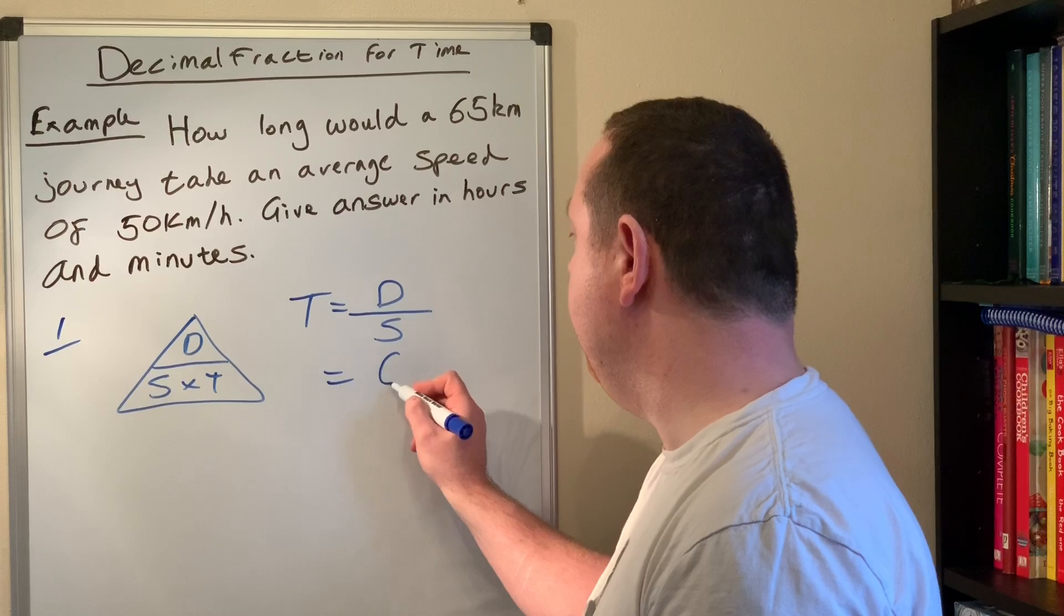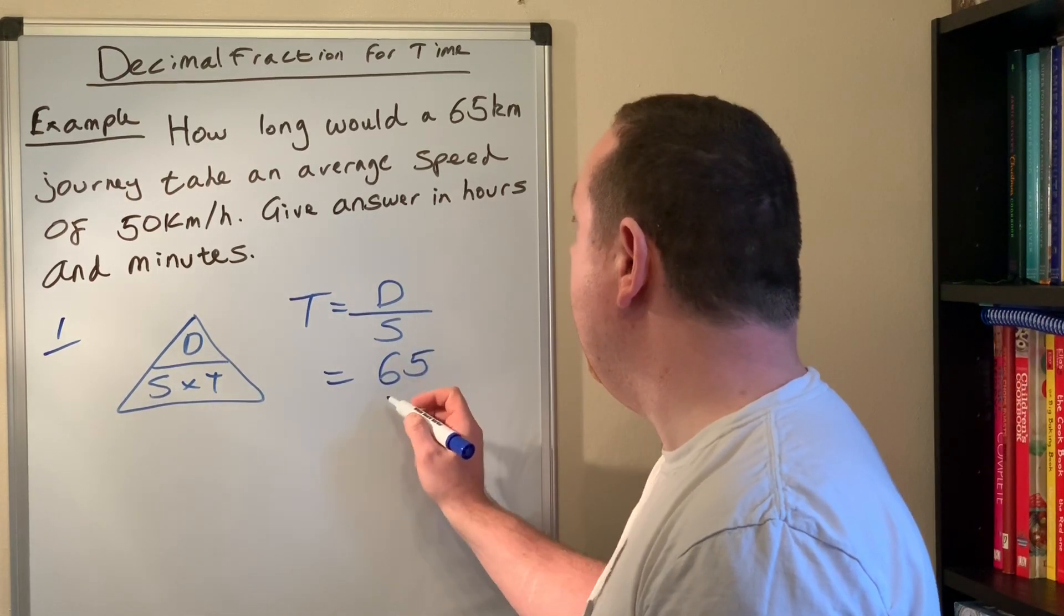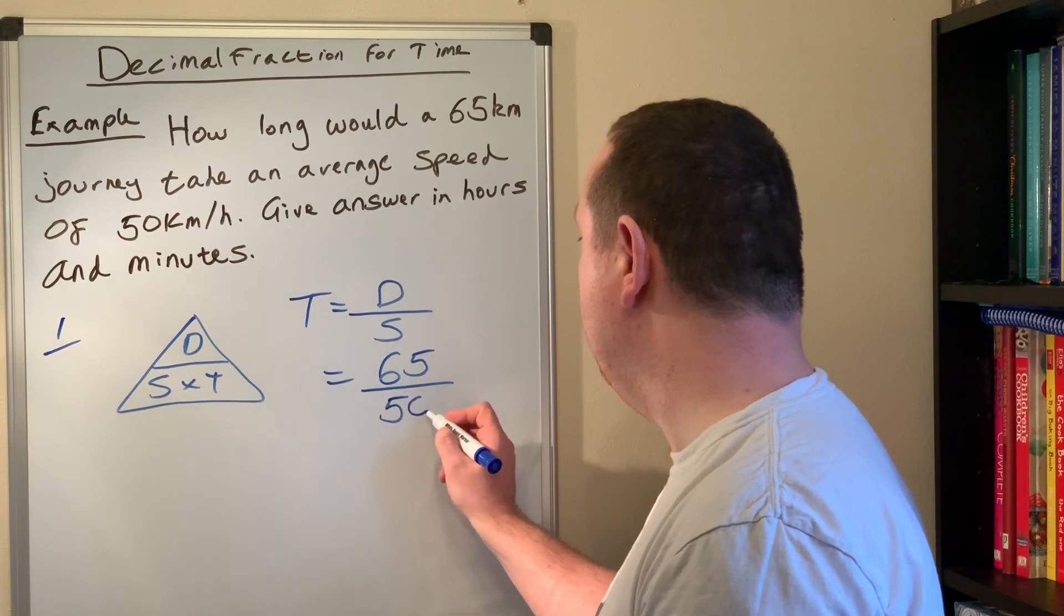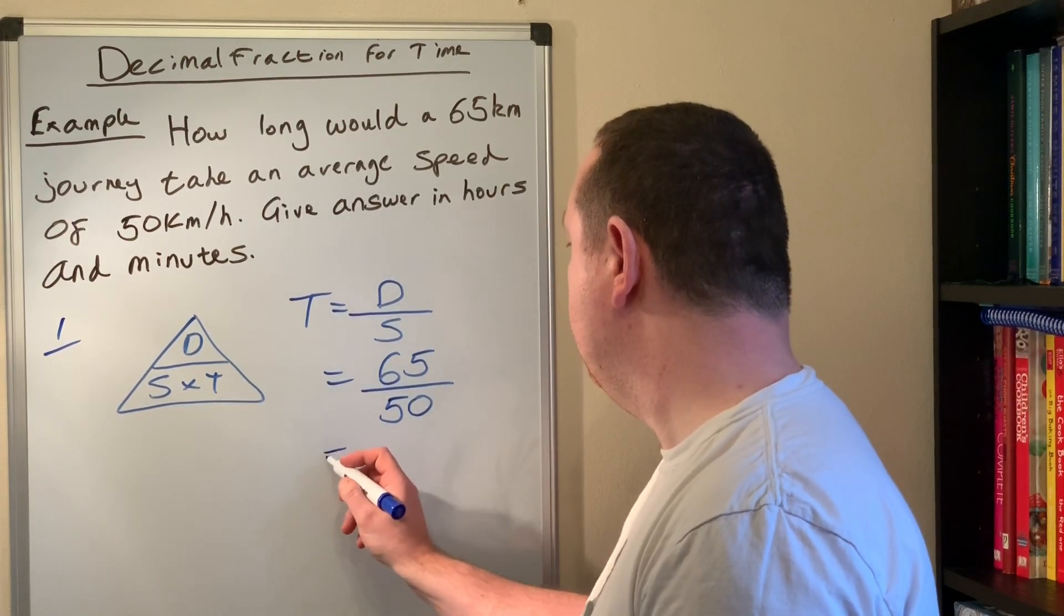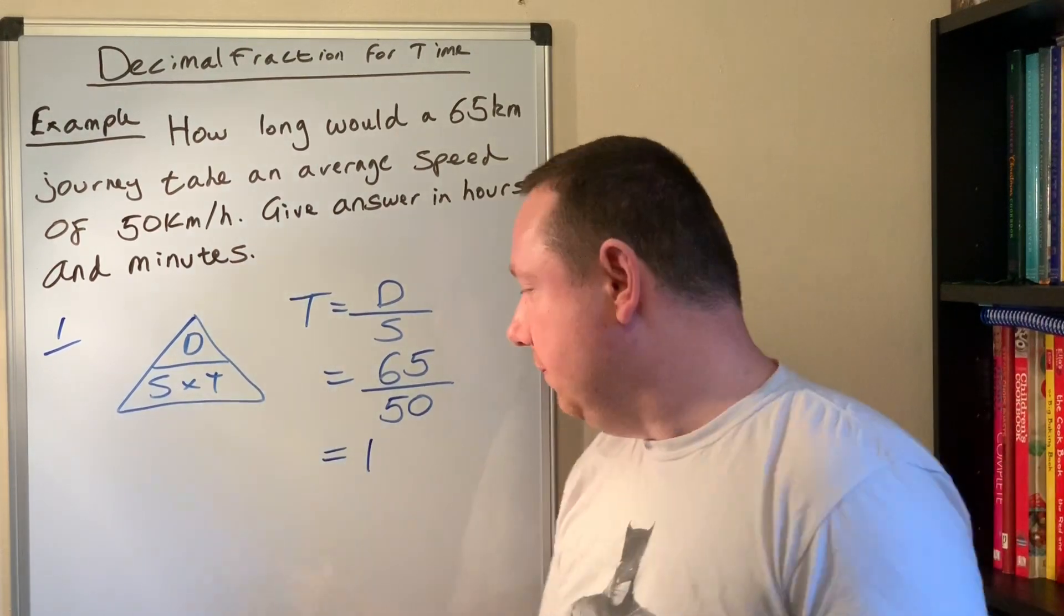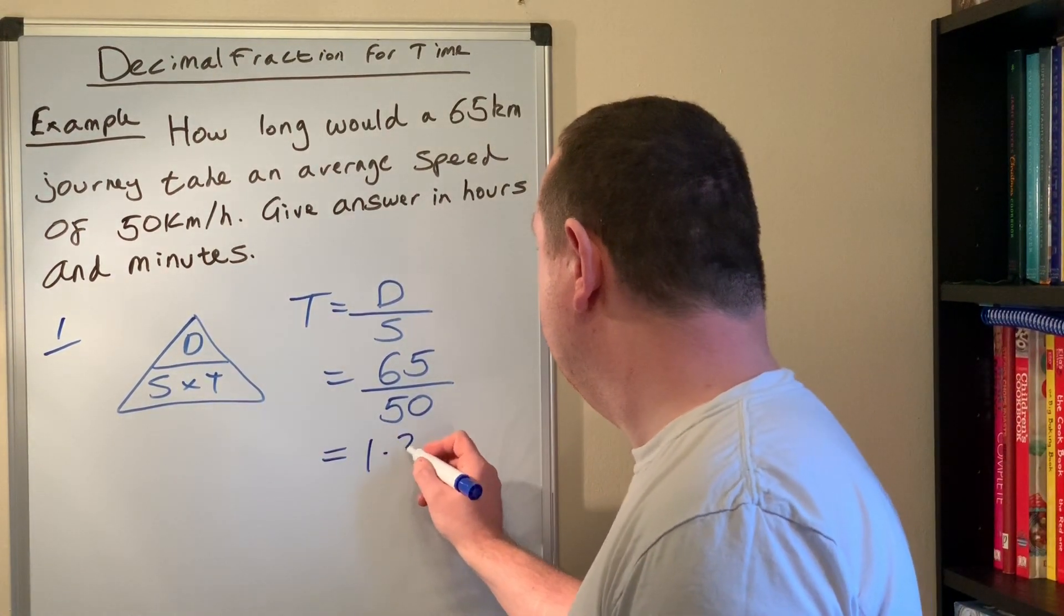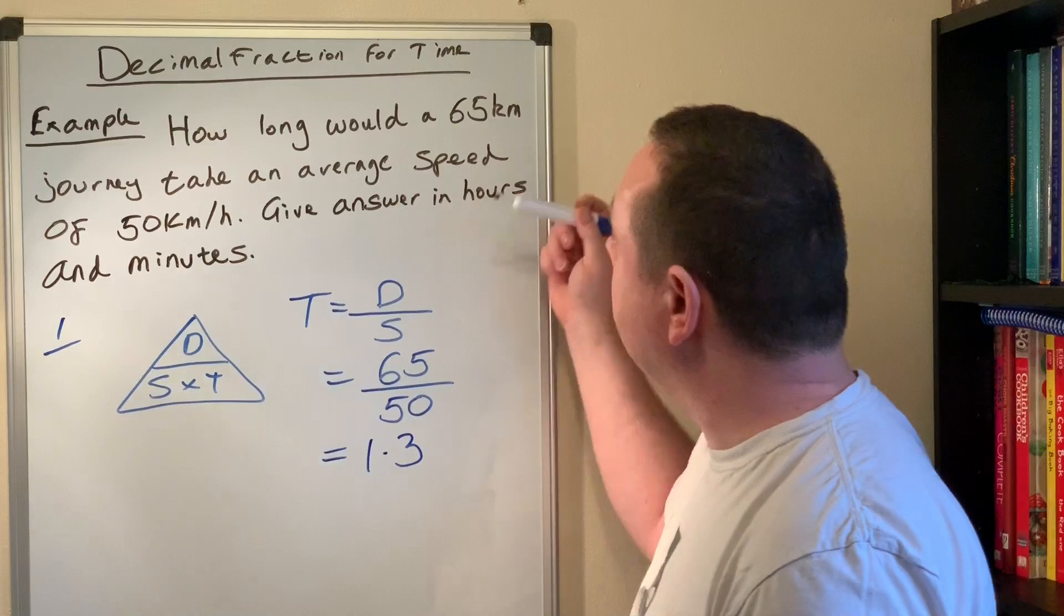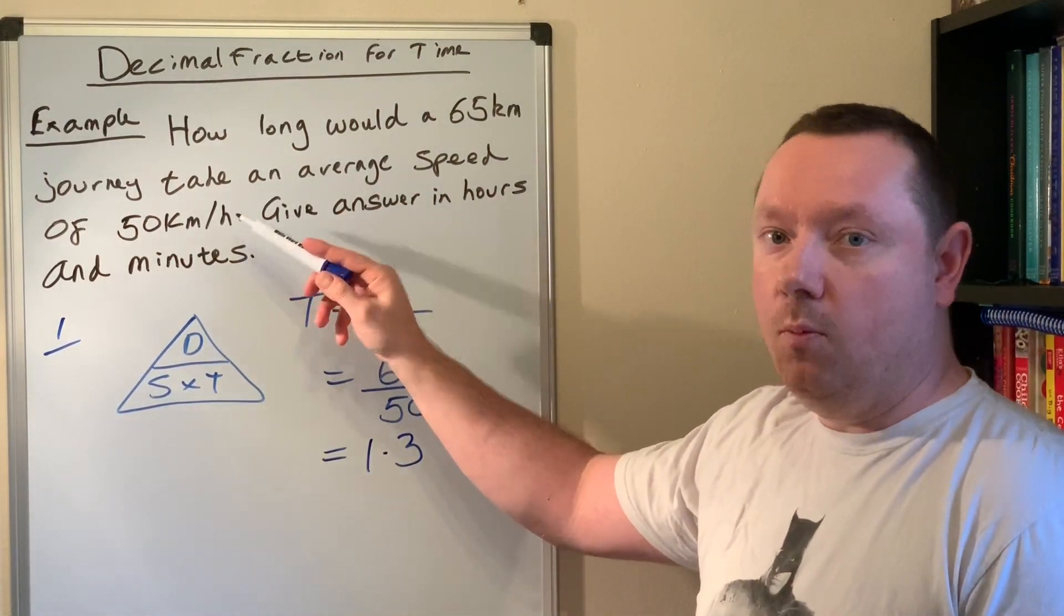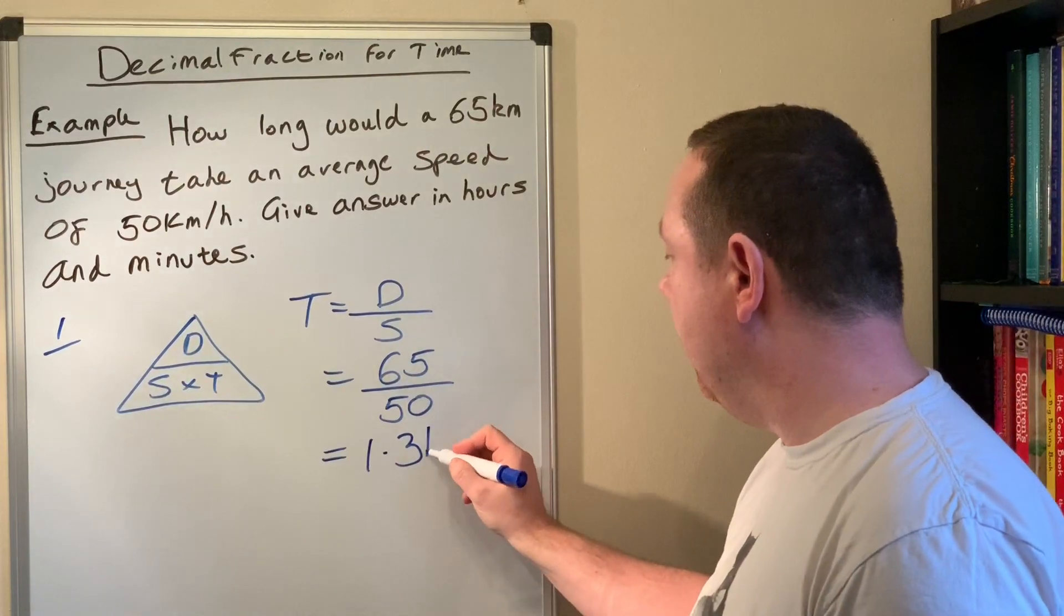The distance is 65 kilometers and the speed is 50 kilometers per hour. 65 divided by 50, which is 1.3. Now the units on this at the moment is hours because the speed was kilometers per hour, so it's 1.3 hours.